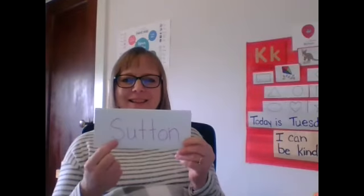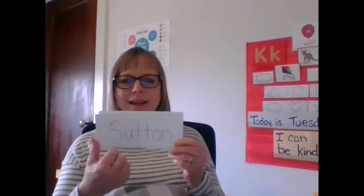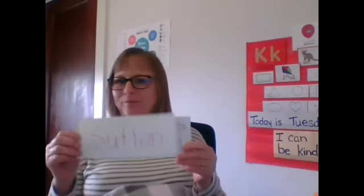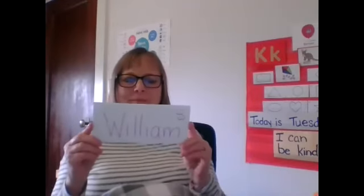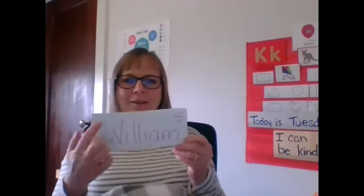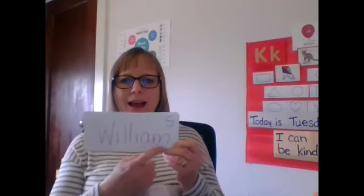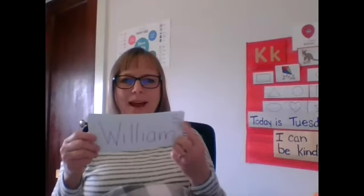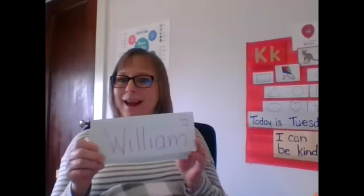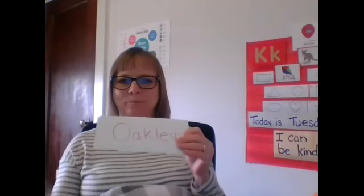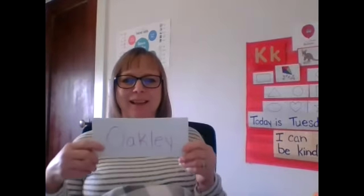Sutton — S-U-T-T-O-N. Does Sutton have a K? But our last name starts with a K. Whose name is this? William — William starts with W-I-L-L-I-A-M. Does William have any K's in his name? No. His name is Oakley.